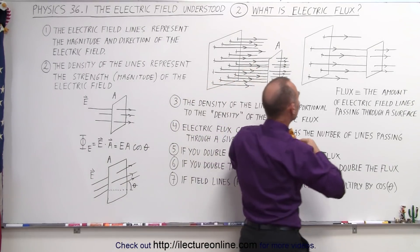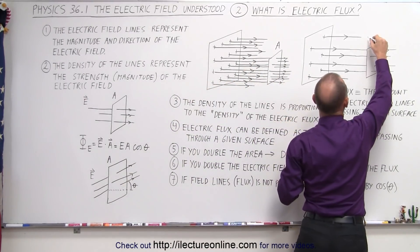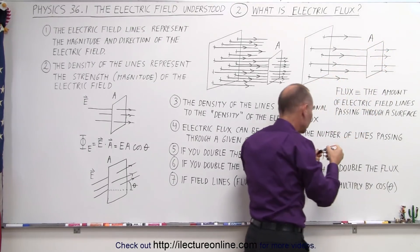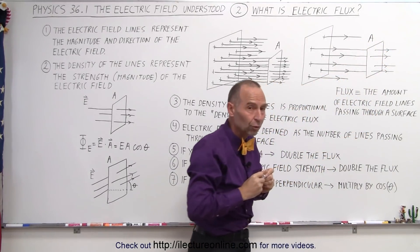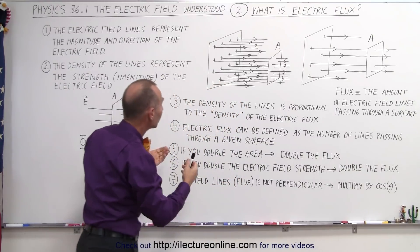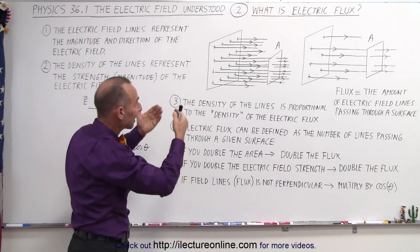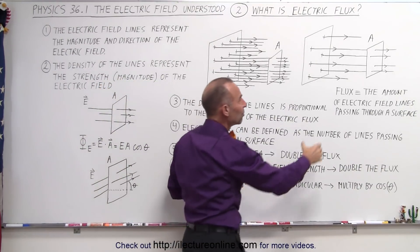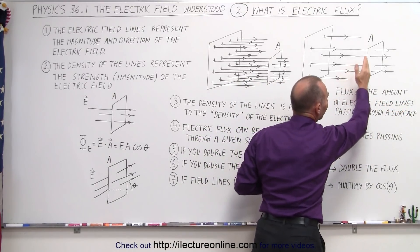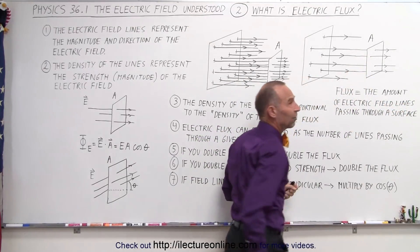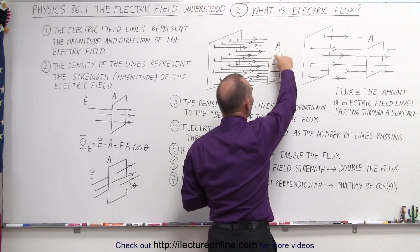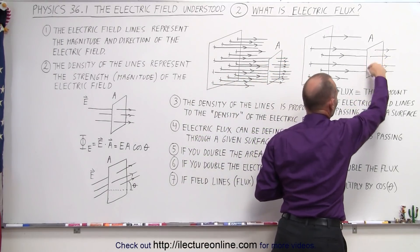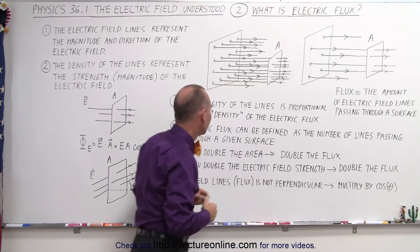If we put a similar surface in front of that, like we did over here, notice that far fewer of those lines will actually pass through the surface. It turns out that electric flux can be defined as the amount of electric field lines passing through a surface like that. So there's more flux going through the surface here, and there's less flux going through the surface over there.